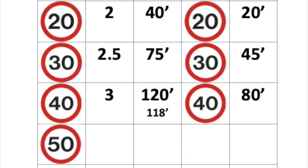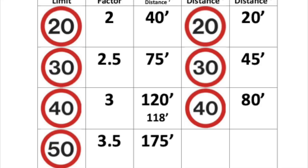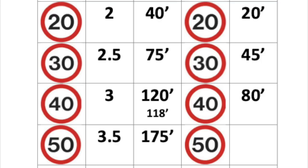Next is 50 miles an hour. You might have noticed by now that the x factor increases by half for every 10 miles an hour the speed limit increases, so the x factor for 50 miles an hour is 3.5. To multiply 50 by 3.5, I take half of 50 giving me 25, multiply 50 by 3 giving me 150, then add the 25 to the 150 to give me 175. So the overall stopping distance at 50 miles an hour is 175 feet. The thinking distance is 50 feet, so 175 feet minus 50 feet gives us a braking distance of 125 feet.